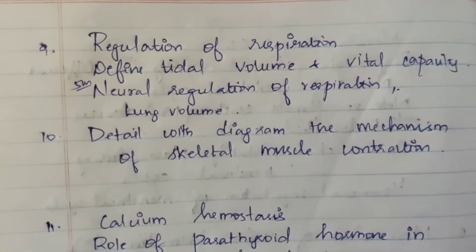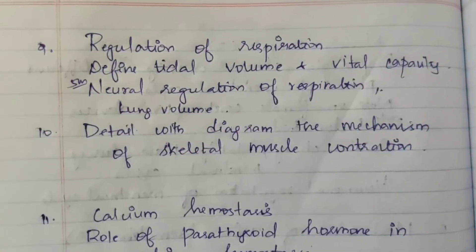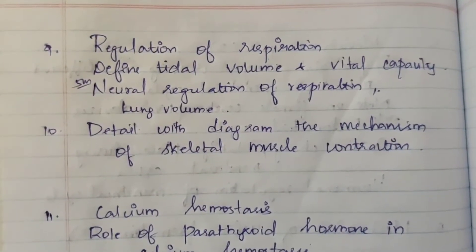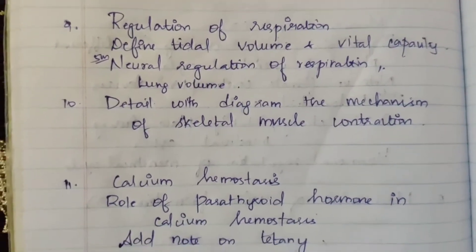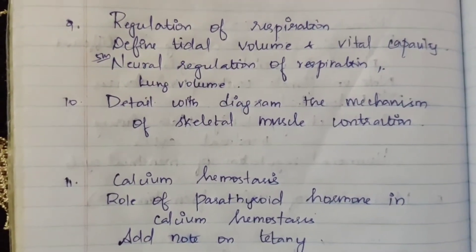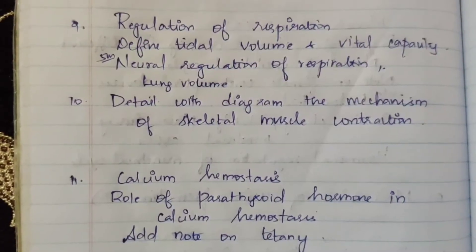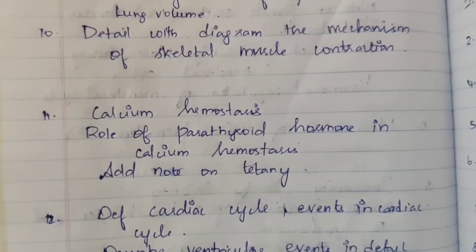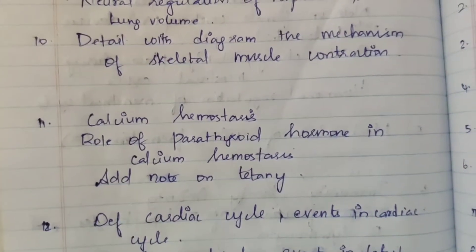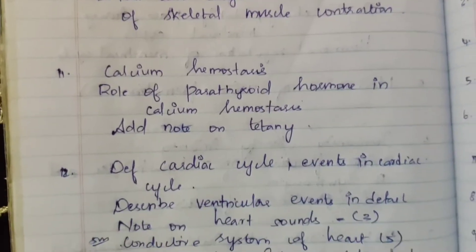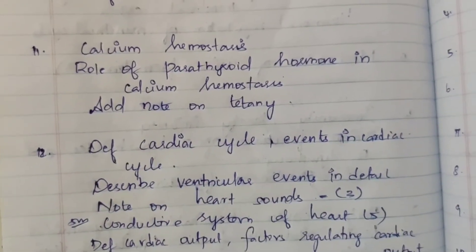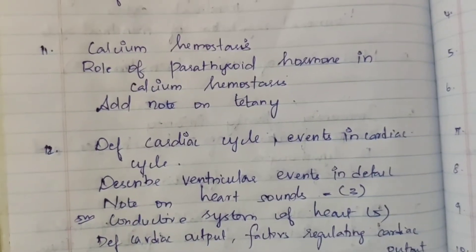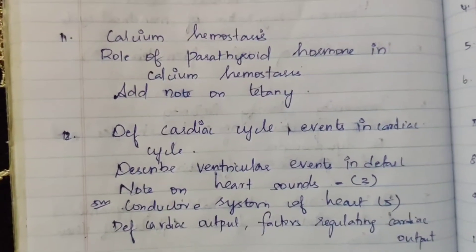Ninth question: regulation of respiration. Define tidal volume and vital capacity. Tenth question: detail with a diagram the mechanism of skeletal muscle contraction. Eleventh question: calcium homeostasis — role of parathyroid hormone in calcium homeostasis, and add a note on tetany.